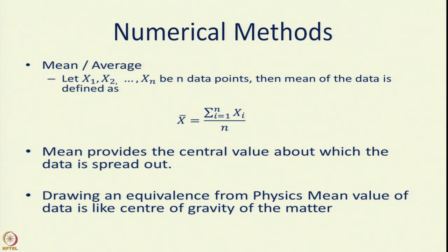Let us discuss different numerical methods to describe and explore the data. Assume we have x1, x2, x3, ..., xn as n data points. We all know that the mean value or average value of the data is defined as x-bar, which is the sum of all values xi divided by the total number of data points n. This is called the mean, arithmetic average, or simply the average of the data points.